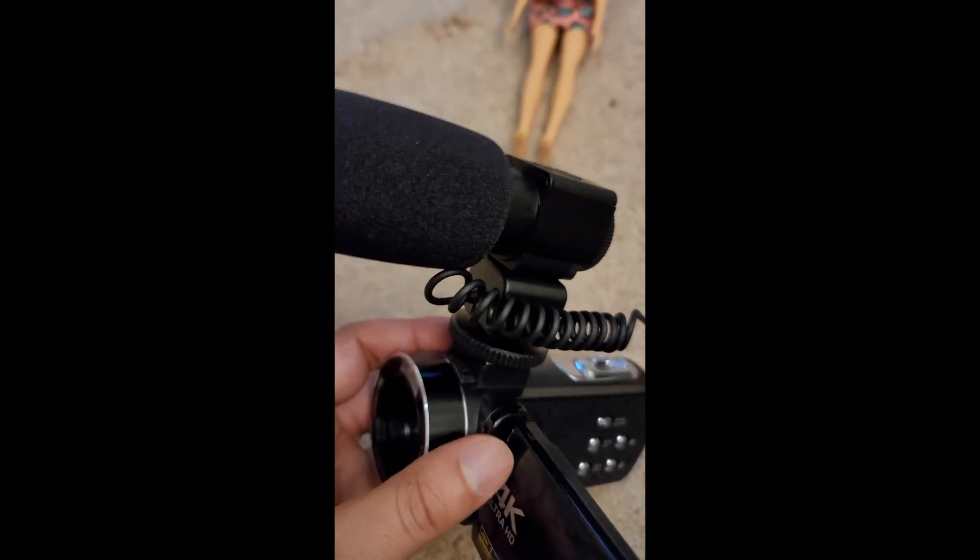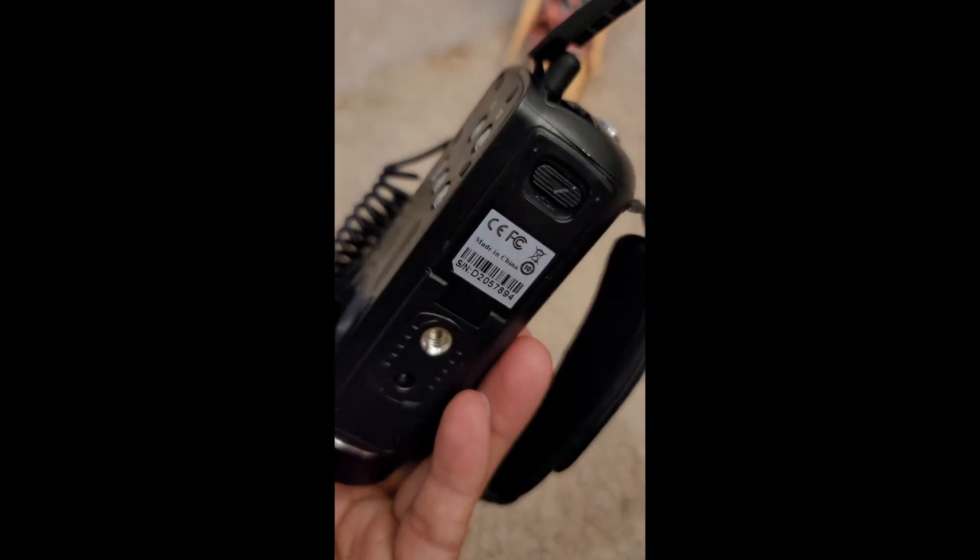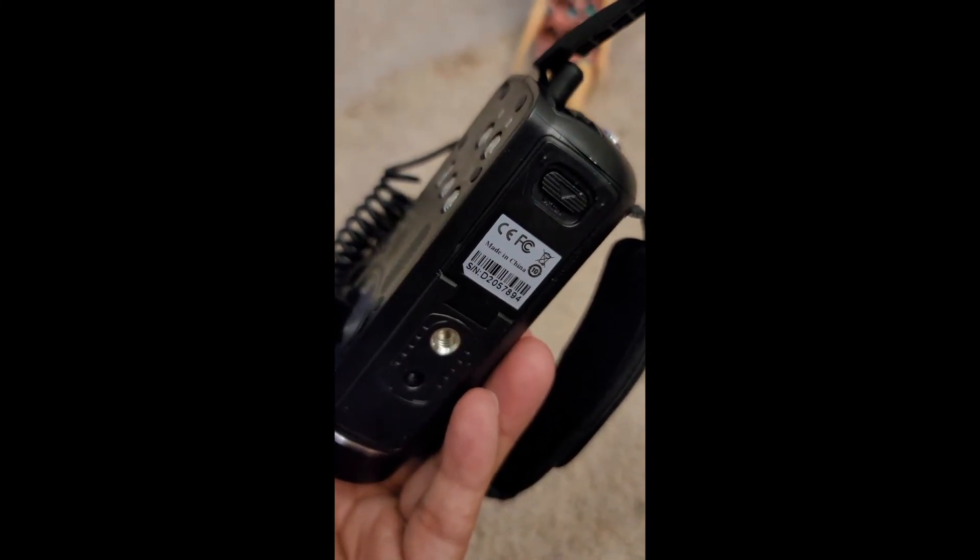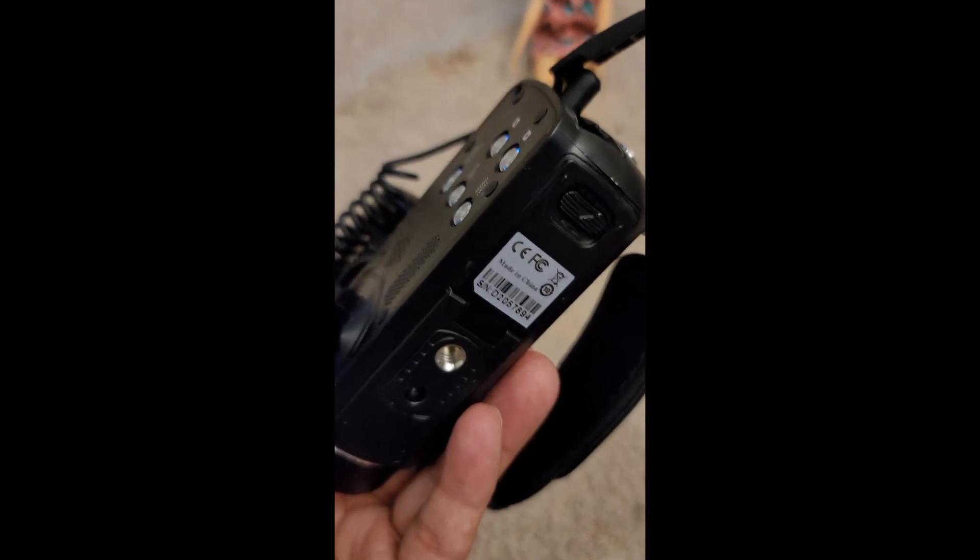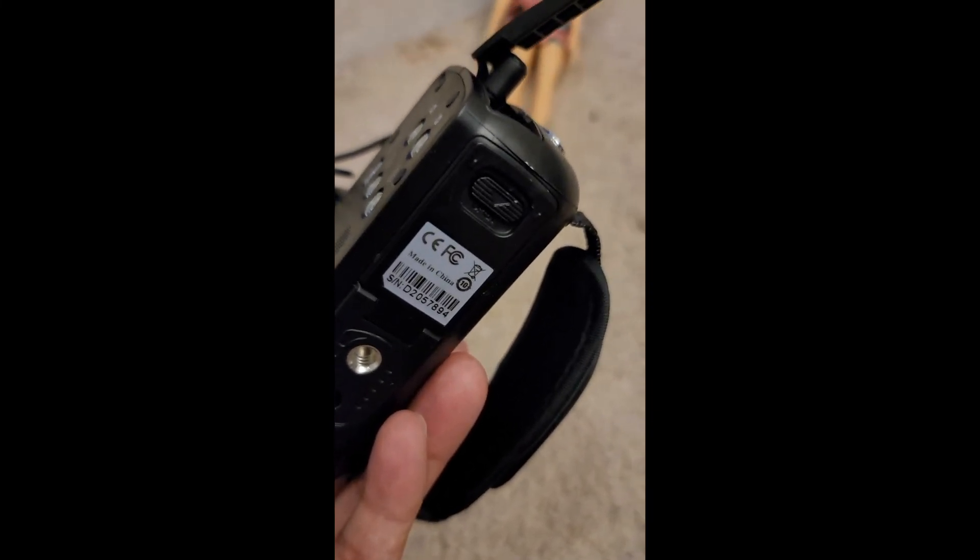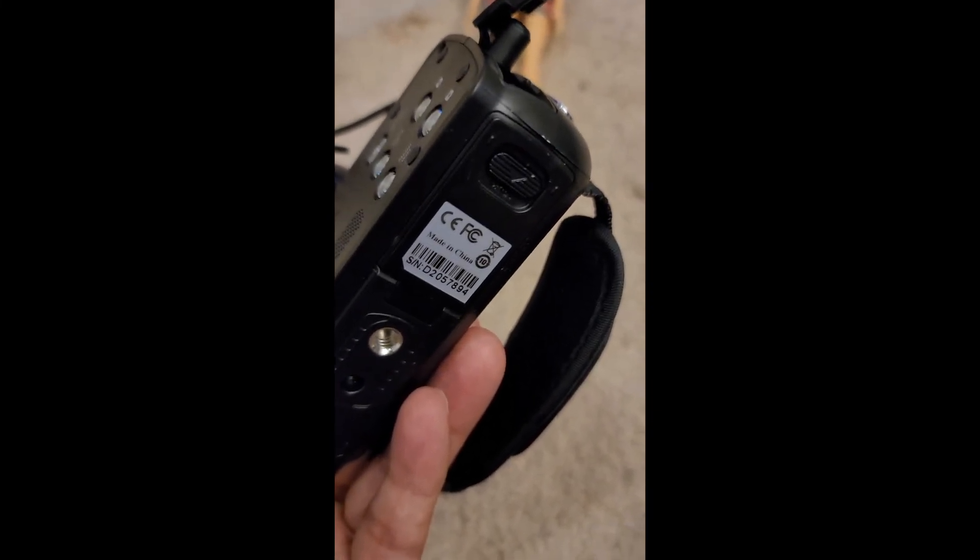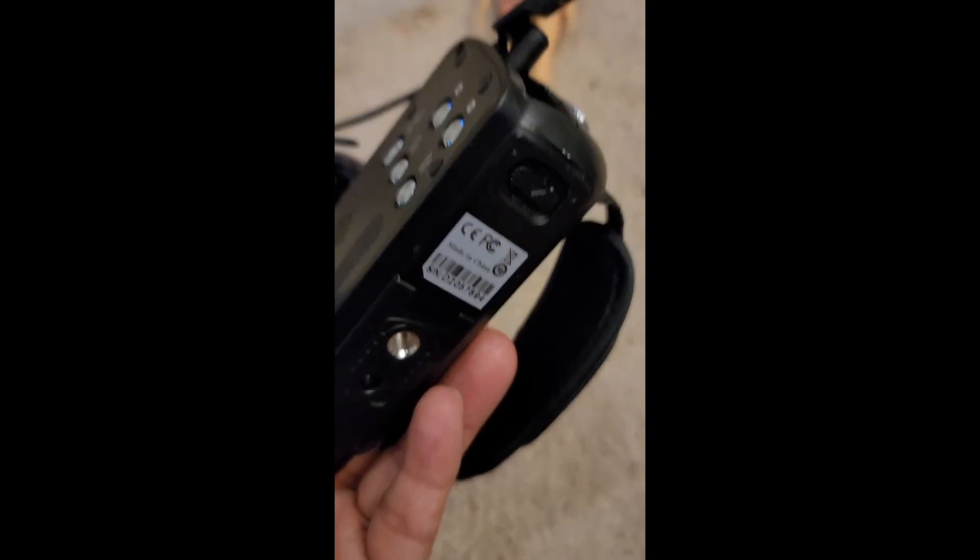That's a tripod mount. There's a small tripod mount that comes with this one, but you can use any standard. And the next one is your compartment for the battery. It comes with two lithium batteries up there.